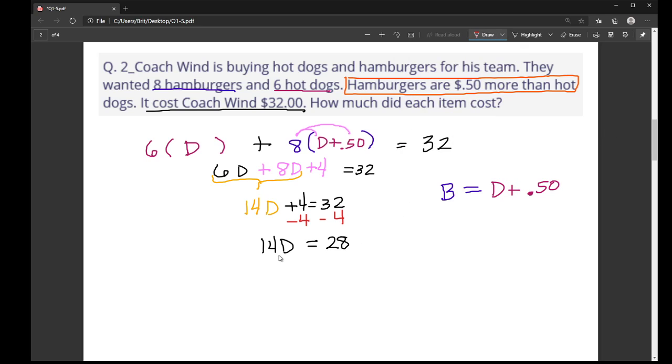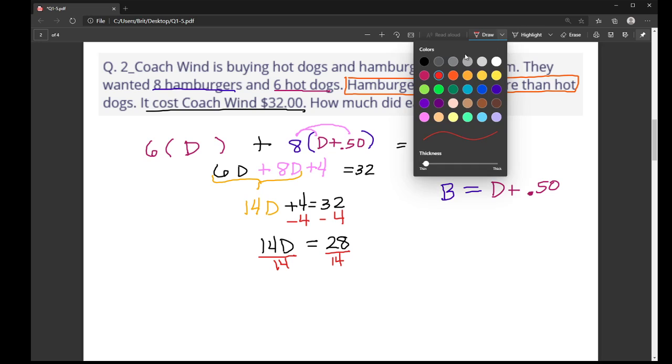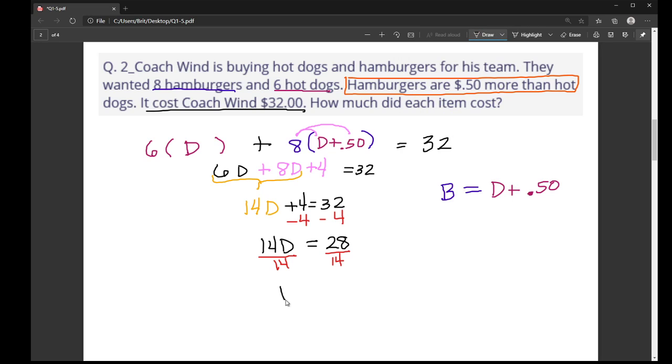So this gives me 14D is equal to 28. And then here, the 14 and the D, when you have a letter and a number touching like this, that's multiplication. So to undo multiplication, I'm going to divide both sides by 14. And that leaves me with D is equal to 2. So one hot dog is $2.